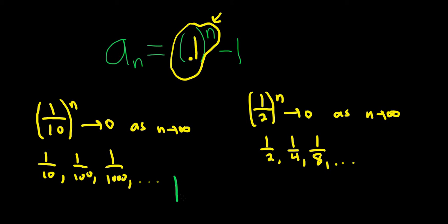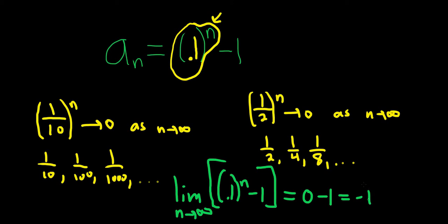So when you take the limit here, let me go ahead and write it down so you see it, of 0.1 to the n minus 1. When you take this limit here, put a bracket there to make it look fancy. You drop the limit sign, so you get 0 minus 1. So you just get minus 1.